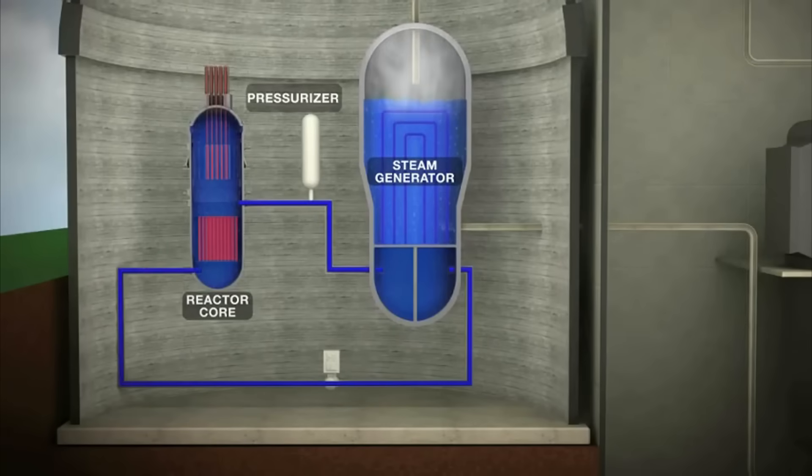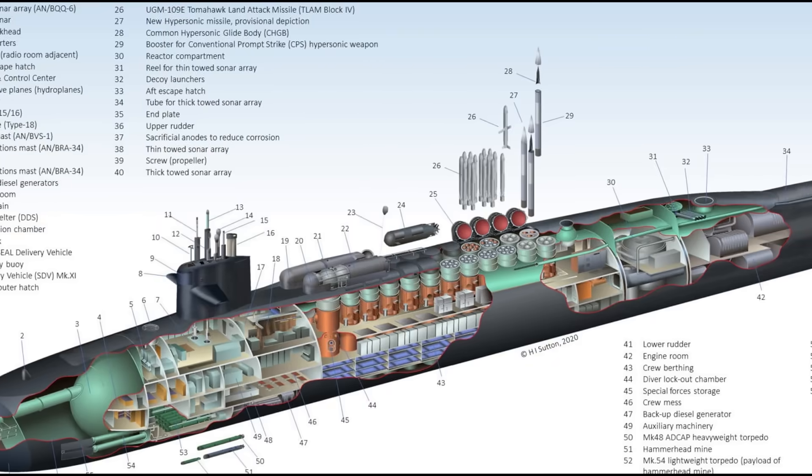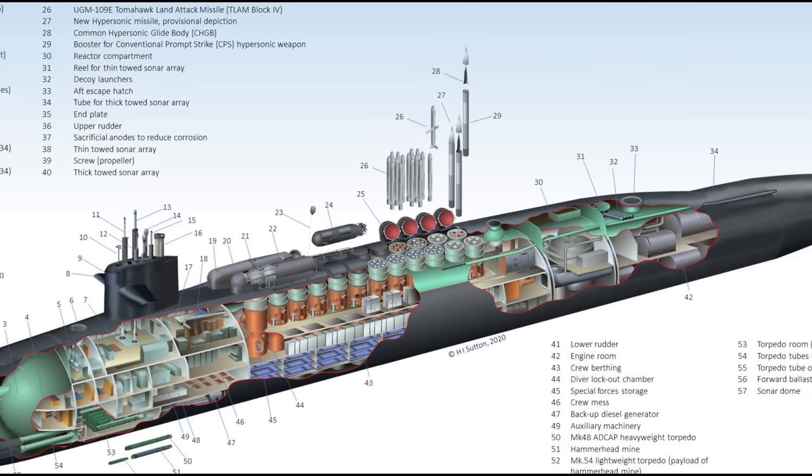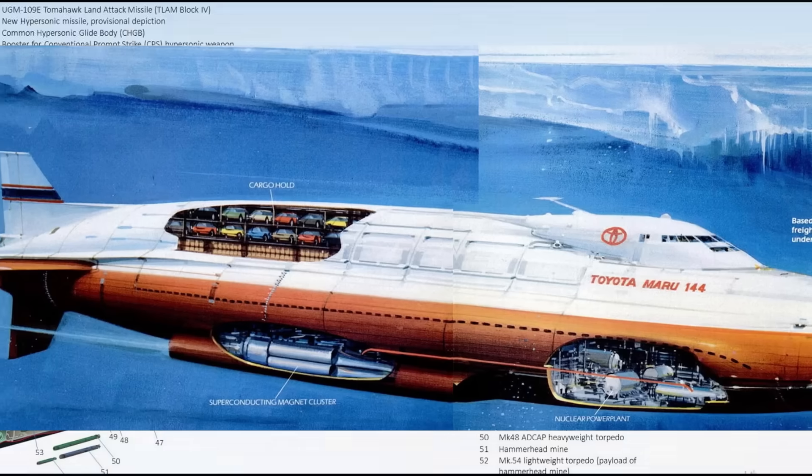But you would still need a very high energy source. Now thankfully in a lot of submarines, there are modern pressurized water nuclear reactors. The Ohio class submarine utilizes an S8G PWR nuclear reactor that can generate over 45 megawatts of power. So in theory, it is possible to supply huge amounts of power to an HTS magnetic MHD drive system.